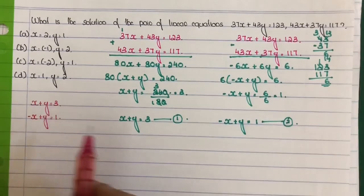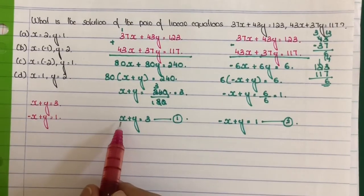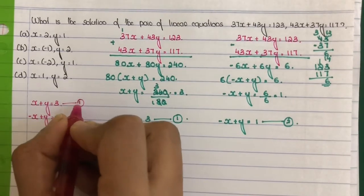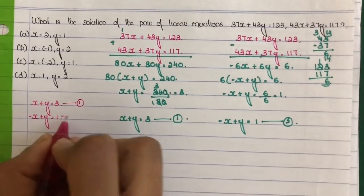Mark it as equation number 2. Now we will solve these two equations: x plus y is equal to 3 and minus x plus y is equal to 1.